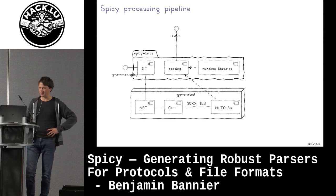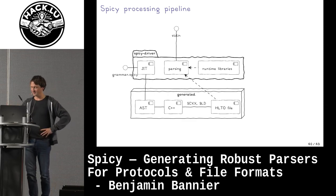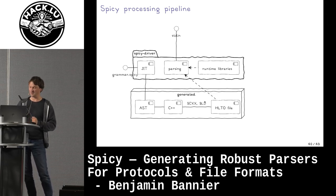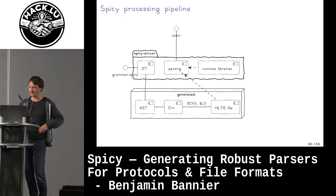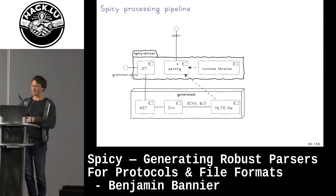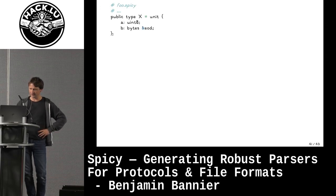The general processing pipeline: we have a SPICY grammar, the SPICY compiler takes that, compiles it through an AST, generates C++, compiles that C++, links it with outside dependencies, and emits an HLTO file — which as an implementation detail is just a shared library. We can then load that library; spicy-driver knows what to do with these libraries, can detect which parsers are in there, hook them up, and by making use of some runtime libraries that spicy-driver has linked in, it can run the parsing for us.